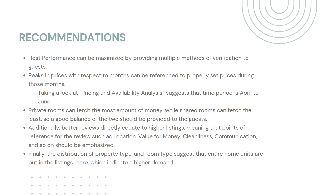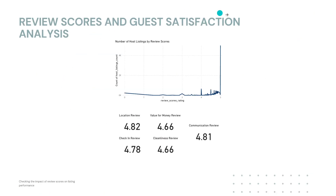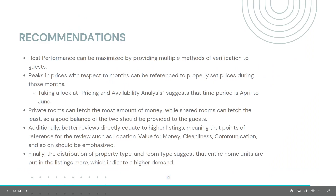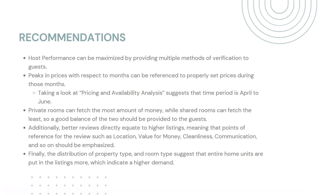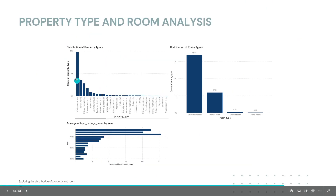Additionally, better reviews directly equate to higher listings, meaning that points of reference for reviews such as location, value for money, cleanliness, and communication should be emphasized, as shown by this graph. Lastly, the distribution of property type and room type suggests that entire home units are listed more, which indicates a higher demand for them, as per this graph right here.